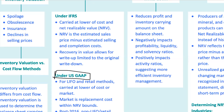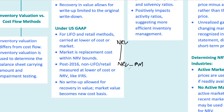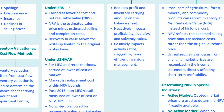Under US GAAP, the rules vary depending on the inventory method. For LIFO, last in first out, and retail methods, inventory is measured at the lower of cost or market. Here, market is usually the replacement cost, but it's subject to some boundaries: the ceiling is the NRV, and the floor is NRV minus a normal profit margin. The key difference from IFRS is that US GAAP doesn't allow inventory to be written back up once it's been written down — once you lower the value, that's the new cost basis.